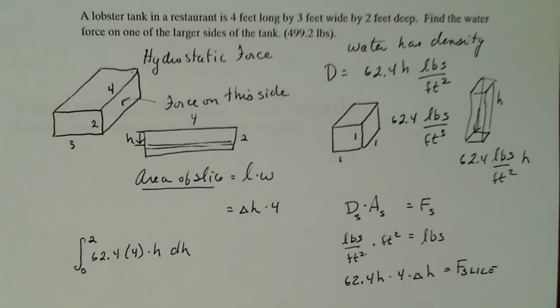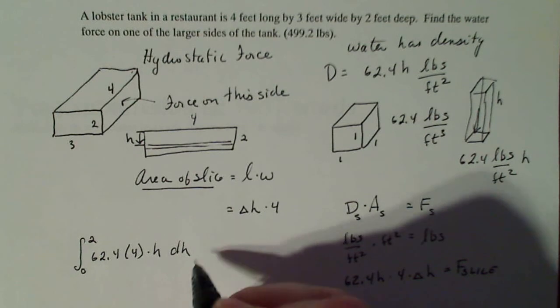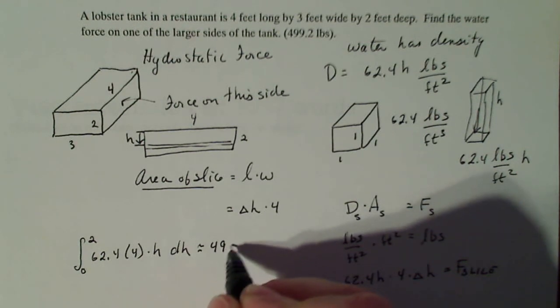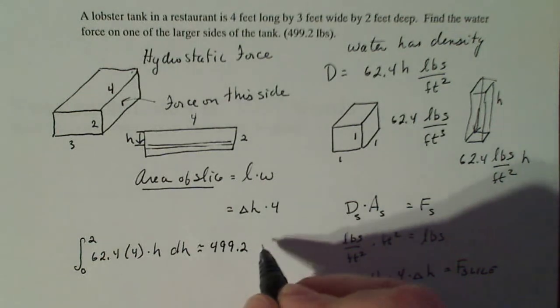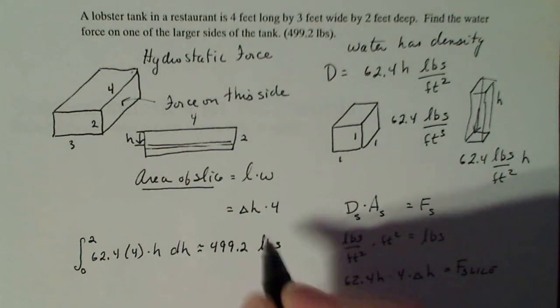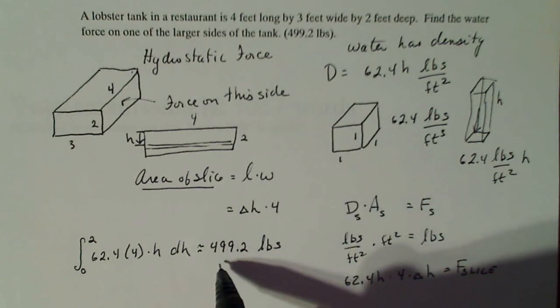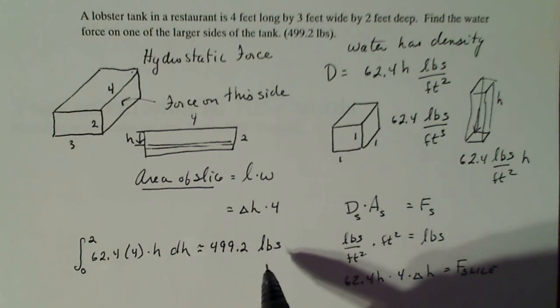So that means that I'm going to integrate 62.4 times four times H dH from zero to two. And again, that's very simple to integrate. You integrate this, do it by hand just to check, and your answer should turn out to be 499.2 pounds. So along the side of that tank, all the water pressure together turns out to be 499.2 pounds of pressure.